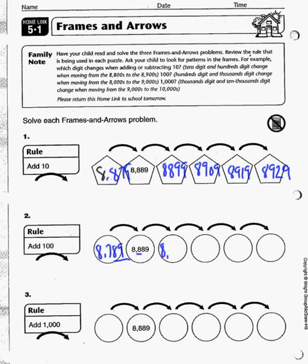So this one we have 8,989, and now 9,089, 9,189, and finally 9,289.